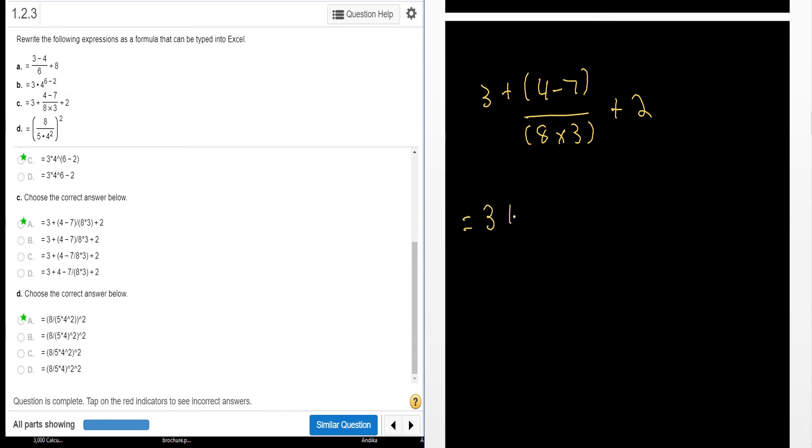So I'm going to have 3 plus the quantity of 4 minus 7 divided by the quantity of 8 times 3 plus 2.